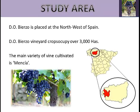Firstly, we talk about the study area. The vineyard Designation of Origin Bierzo is placed at the northwest of Spain and its vineyard crops occupy over 3,000 hectares. The main variety of vineyard cultivated is the Mencía variety, which forms 65% of the total vineyard cultivated.